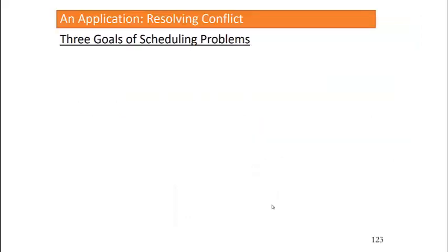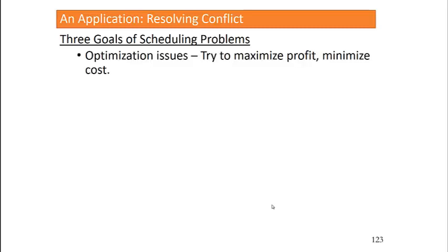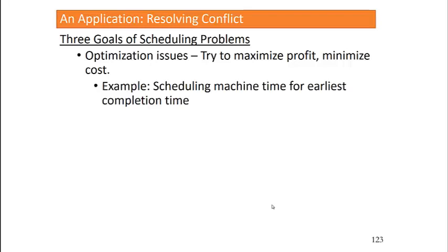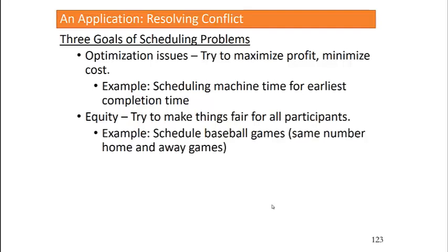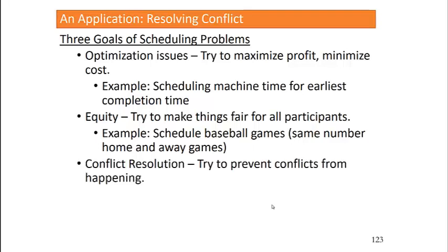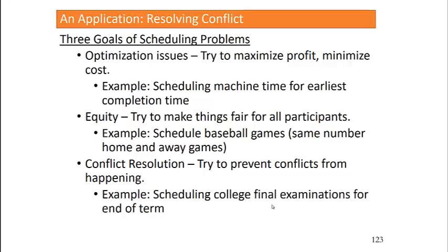All right, now we're all warmed up. Let's look at an application of graph coloring for resolving conflict. So there are three goals of scheduling problems. First, optimization issues. We want to try to maximize profit and minimize cost. For example, we want to be able to schedule machine time for earliest completion time. Secondly, equity. We'd like to try to make things fair for all participants. For example, when we schedule baseball games, we'd like for teams to have the same number of home and away games. Finally, conflict resolution. We'd like to try to prevent conflicts from happening. For example, scheduling college final examinations for the end of the term or semester.